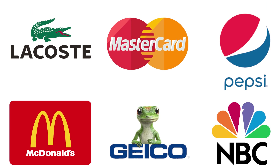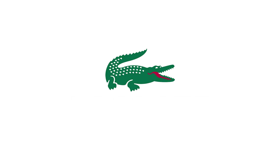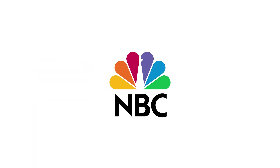Combination mark — true to its name, a combination mark logo combines graphic images, words, and colors to create one logo. It combines an icon and wordmark, or a mascot and letterform. Examples include Lacoste, Dropbox, Dove, and MBC.